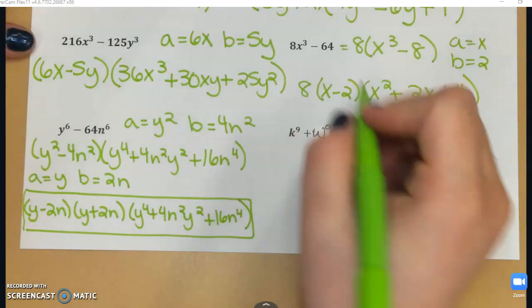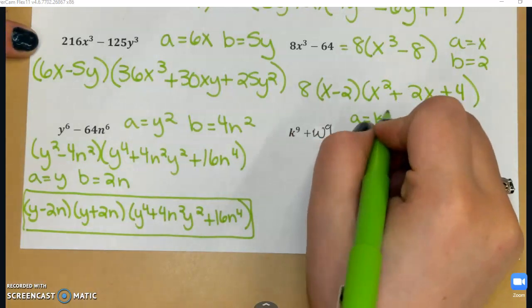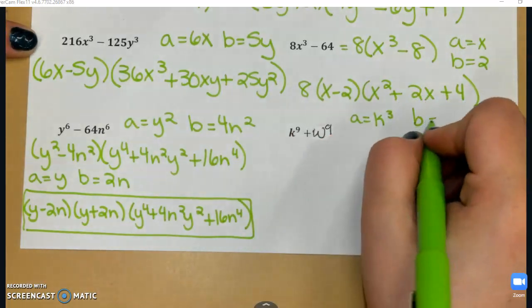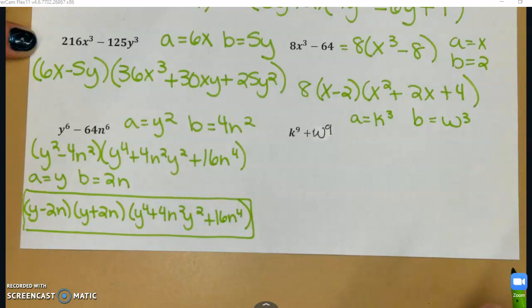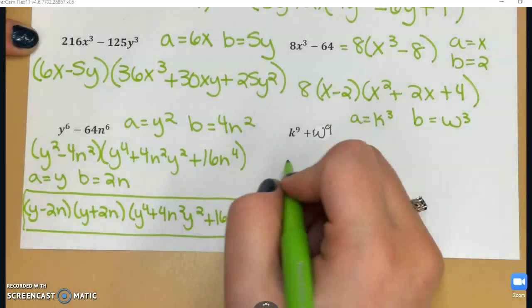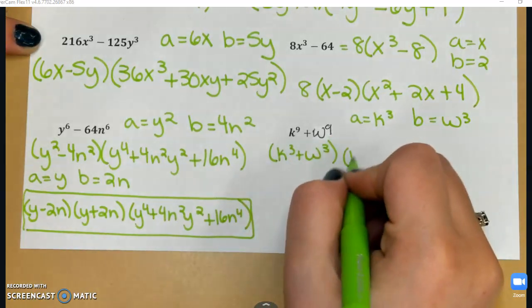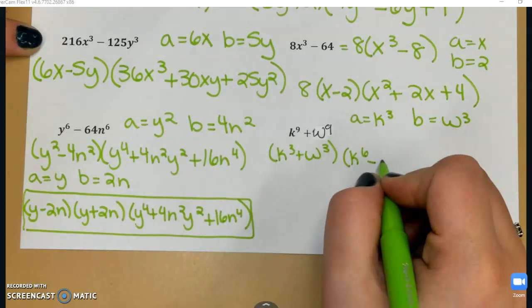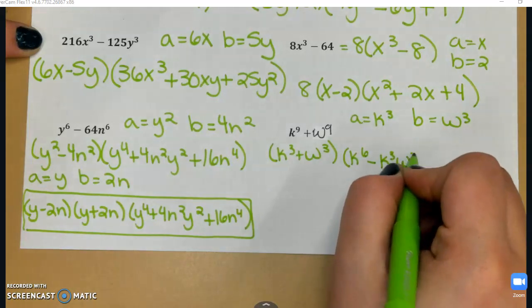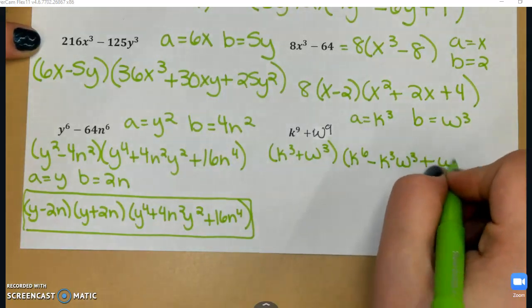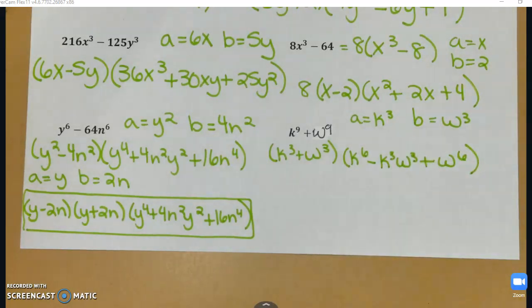And this is a sum of two cubes. So a is going to be k³, and b is going to be w³. So my sum of two cubes, that is going to give me (k³ + w³)(k⁶ - k³w³ + w⁶). Now, looking at what I have factored, I have another sum of cubes at the very front.